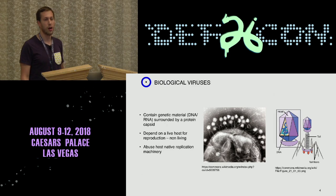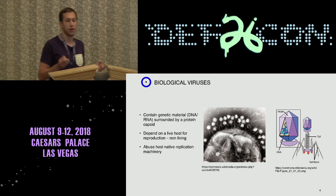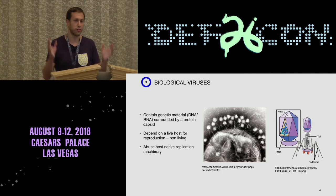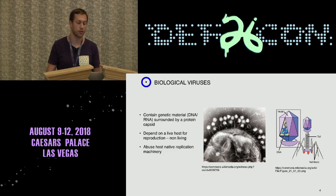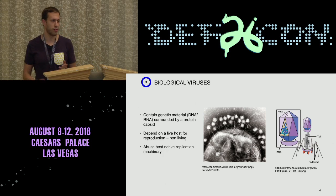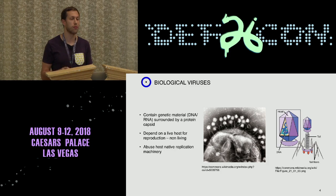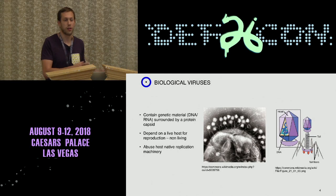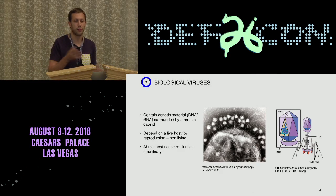So I'll start with the background. What are biological viruses? Basically, biological viruses are structures that contain genetic material — it can be DNA or RNA — which is surrounded by a protective structure called a capsid, which is a protein structure. What's unique about viruses is that they are defined as non-living, meaning they cannot reproduce on their own. In order to reproduce, they must abuse the replication machinery of another living cell.